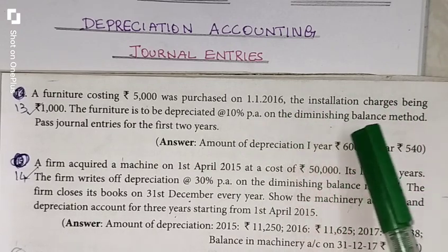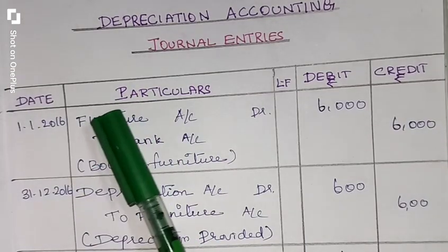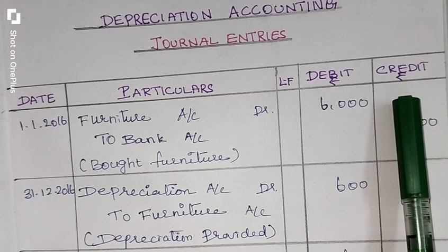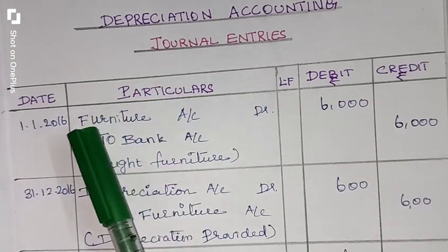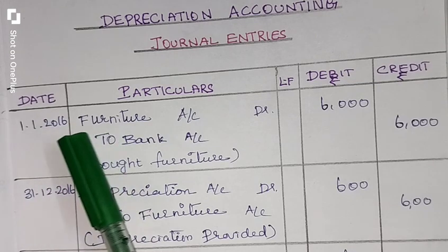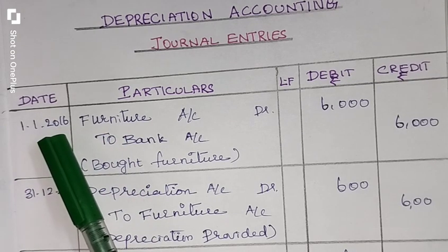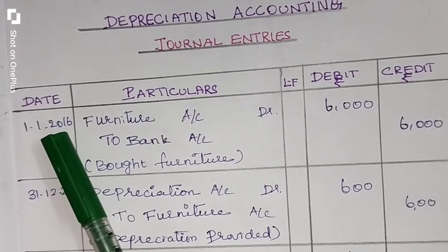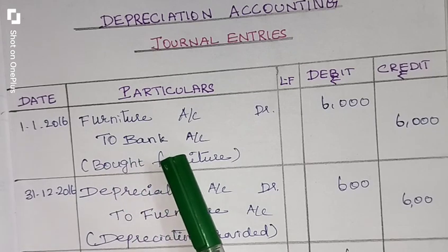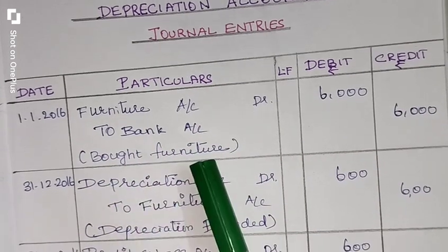That means we use the written down method. The format of the journal entry is: date, particulars, LF, debit Rs., credit Rs. When did we purchase the furniture? That is 1-1-2016. The journal entry for purchasing the asset: Furniture Account debit to Bank Account, Rs. 6,000. Narration: bought furniture.